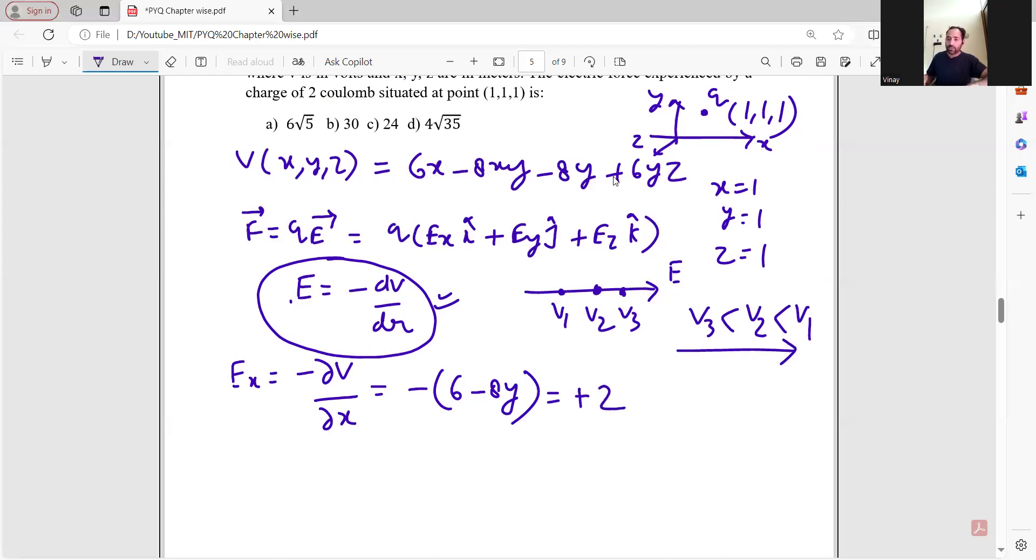Ey equals minus del V del y with respect to y. The derivative is 0 here, then minus 8x minus 8 plus 6z. At point (1,1,1), this becomes minus 8 minus 8 plus 6, which is minus 10.